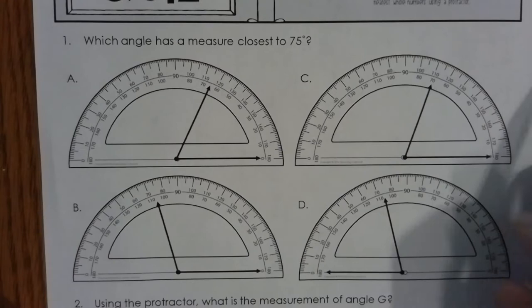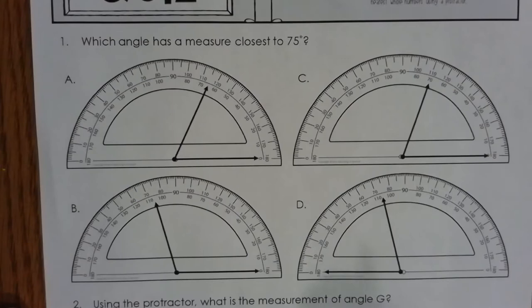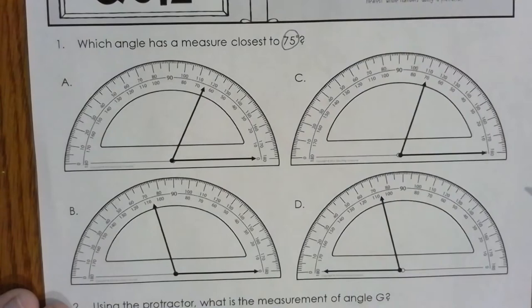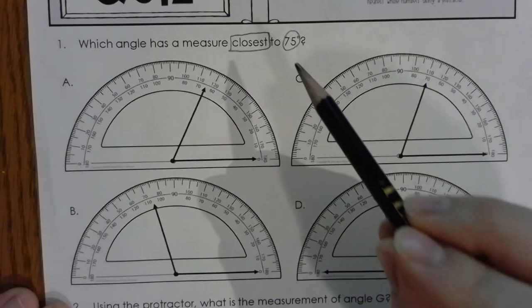The first thing I see here is that it's asking which angle has a measure closest to 75 degrees. Remember, when you see that little circle above a number, that's just telling you to say 'degrees' — like if you saw a dollar sign next to a number. So as I'm reading this word problem, I should circle 75 because that's my number. There's one more key word: 'closest.' None of these protractors might actually equal 75, but I'm still looking for whichever one is closest.